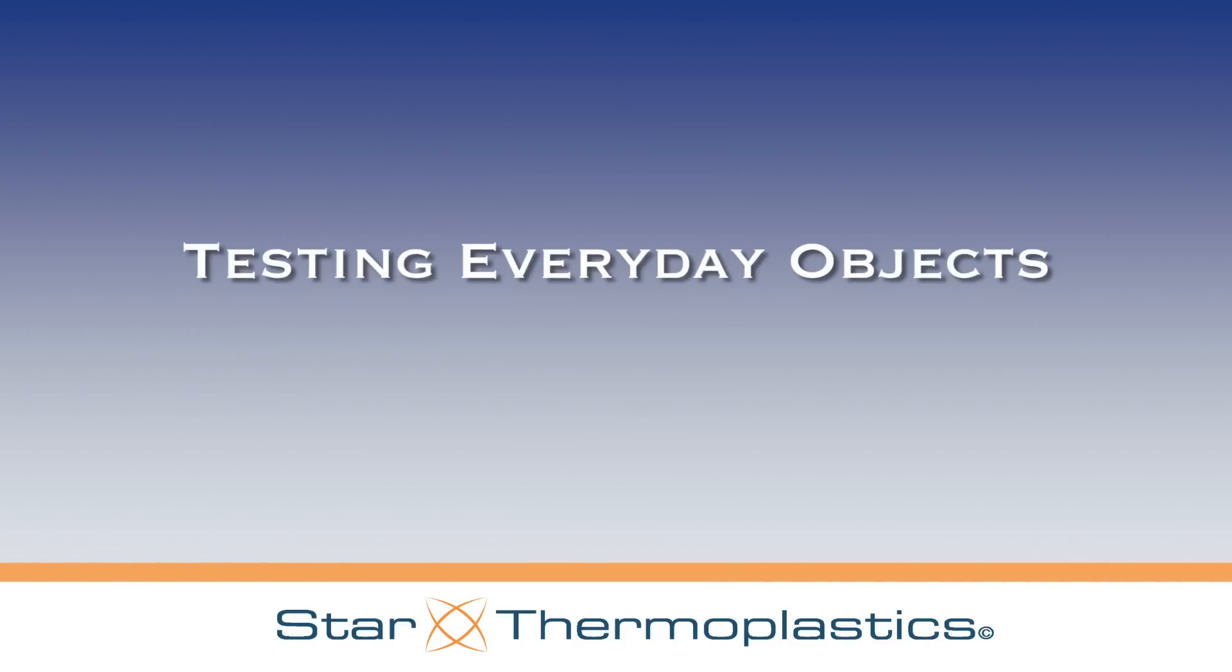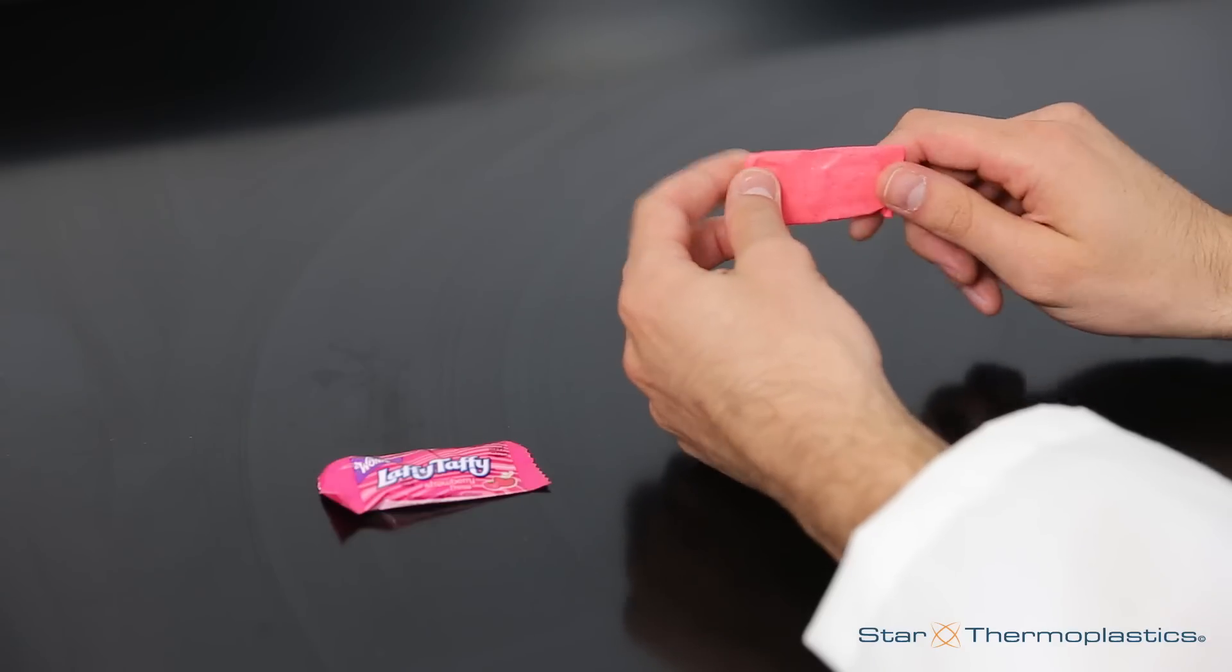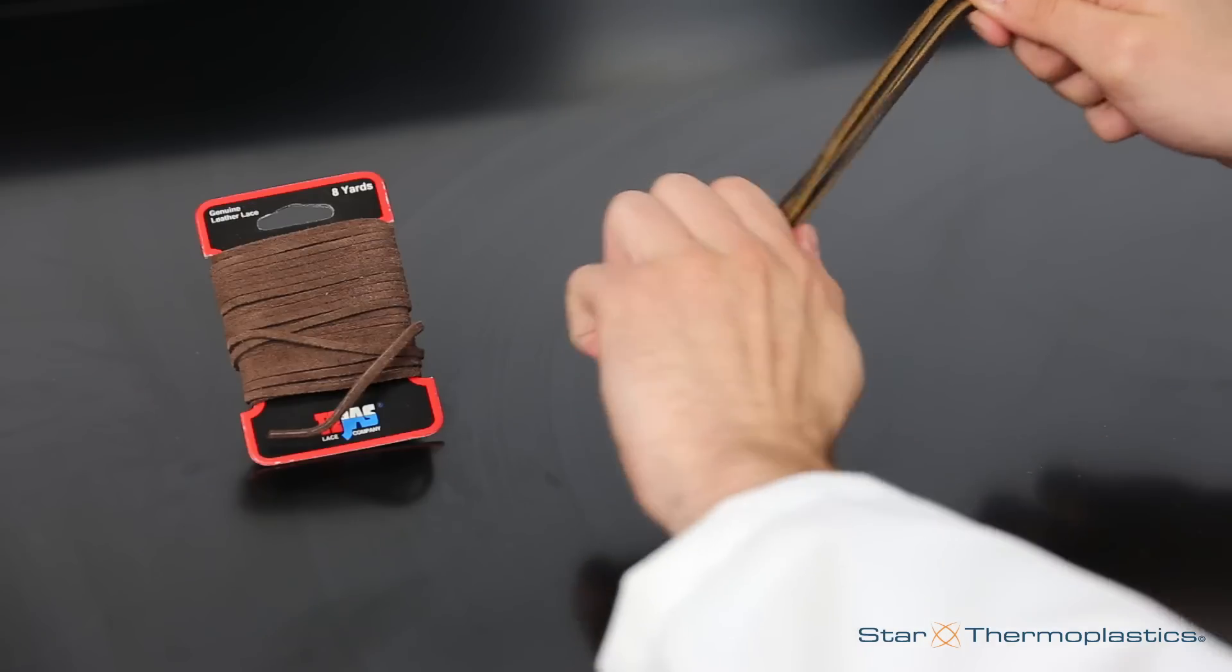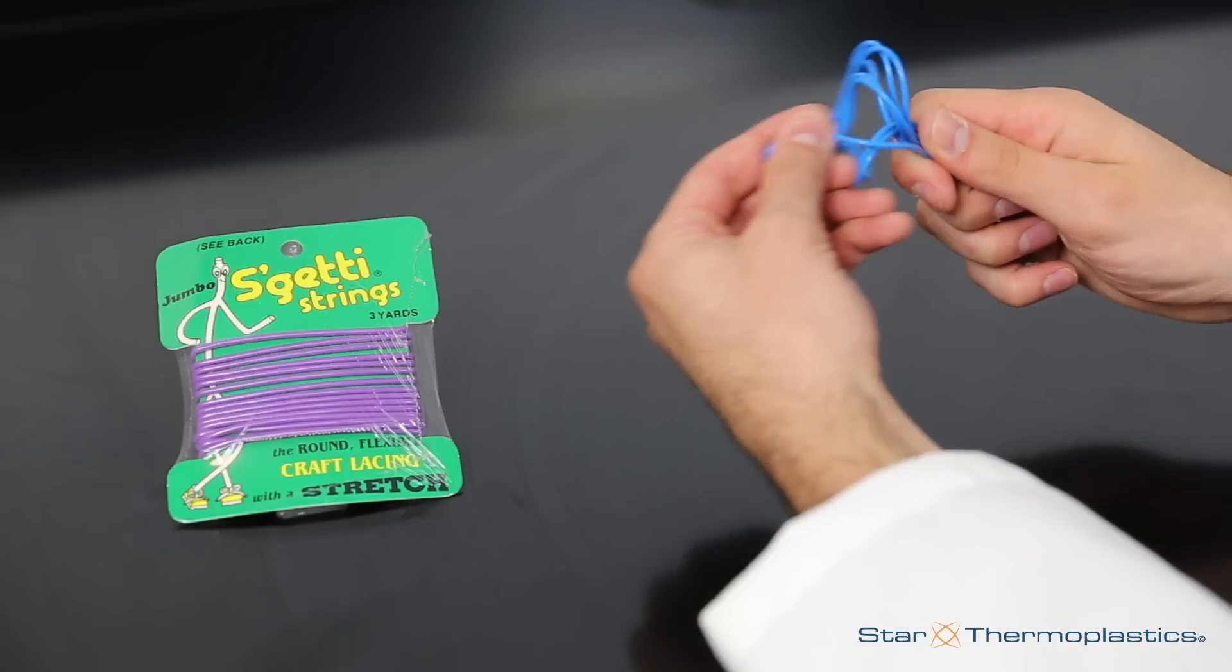How do some everyday objects compare? We will show you a few examples, including Laffy Taffy, leather straps, and plastic cording used in craft projects.